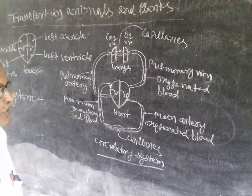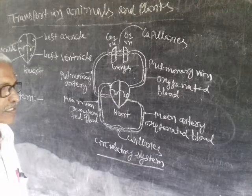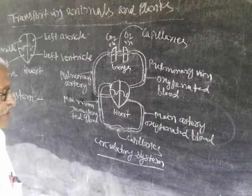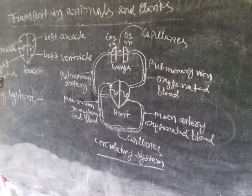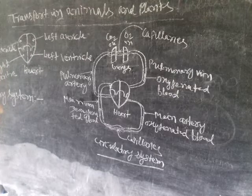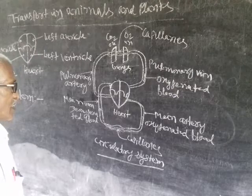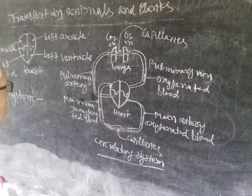This process takes place again and again inside the body. This is the circulatory system. This is clear from the diagram.